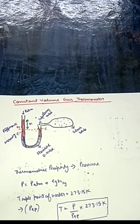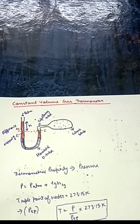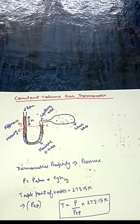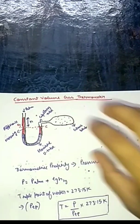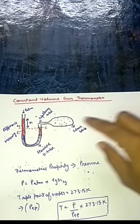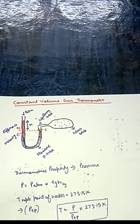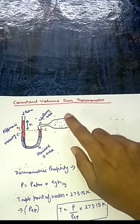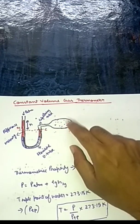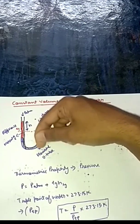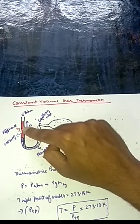Now how do you find out the temperature? You found out the pressure, and a change in pressure means a change in temperature. Suppose you attach the glass bulb to a body whose temperature you want to measure. As the temperature of the body increases, the gas molecules inside the glass bulb push the mercury down, causing the mercury on the other side to get pushed up.